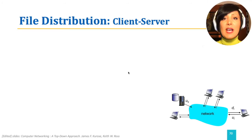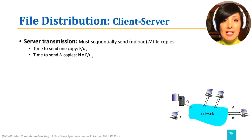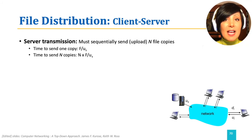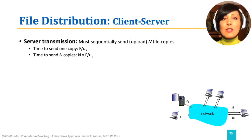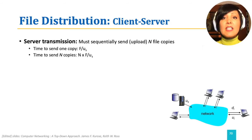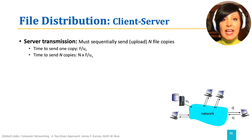If US is the server upload capacity and UI and DI are each client's upload and download capacity, with file size F, the time to send one copy from the server will be F divided by US. With N clients, the server has to send the file N times, so the time to send N copies will be N times F divided by US. This increase is linear in N.